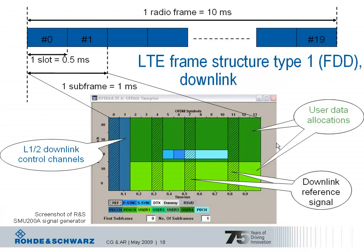This slide shows the LTE frame structure type 1, which is for FDD — frequency division duplex — operation. The radio frame is defined as 10 milliseconds, the same definition as in wideband CDMA. One radio frame contains 10 subframes, and one subframe contains two slots. Now let's have a closer look at the subframe contents.